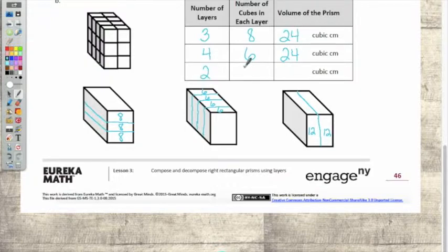So how many layers do I have? Two. Two. Two layers of twelve. Twenty-four cubic centimeters. Okay. How are you doing? Pretty good? Yeah. Okay. So let's look at the next page.